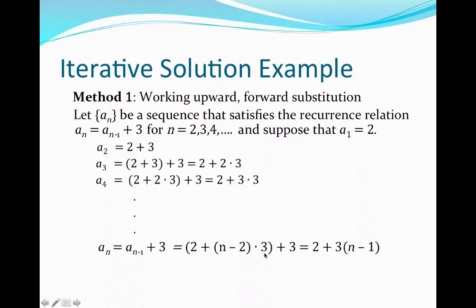So, 2 plus (n-2) times 3 plus 3 gives us 2 plus 3 times (n-1). We could generalize this to say that at subscript 4, it's 2 plus (4-1) times 3. So a_n is going to be 2 plus (n-1) times 3. We could then use induction to check that this formula actually is a formula for this recurrence relation, and we can do that in class.